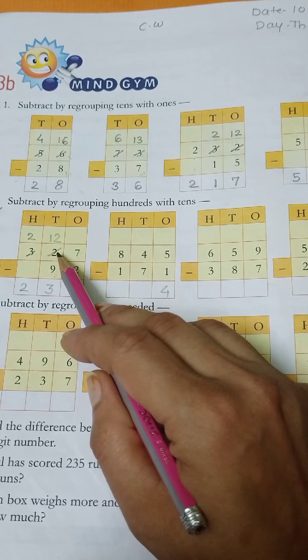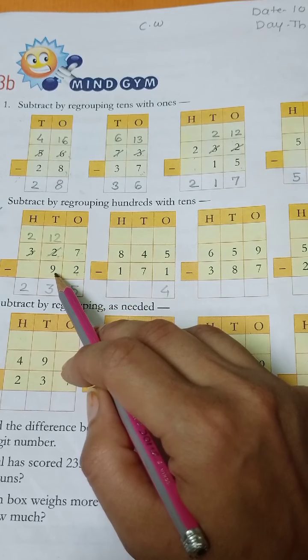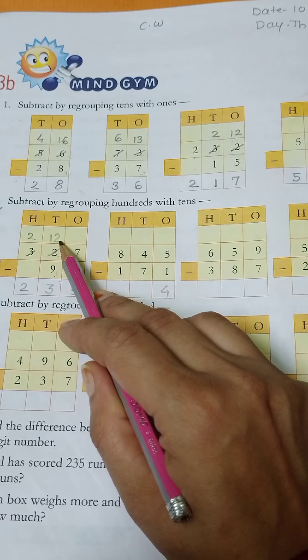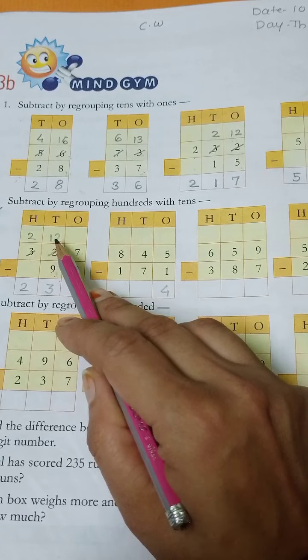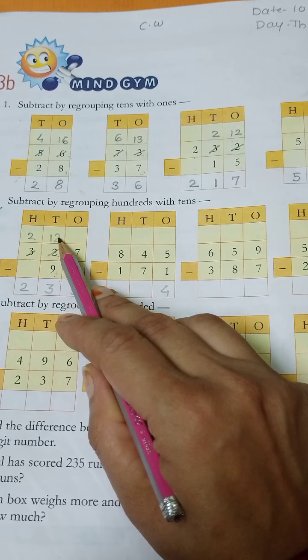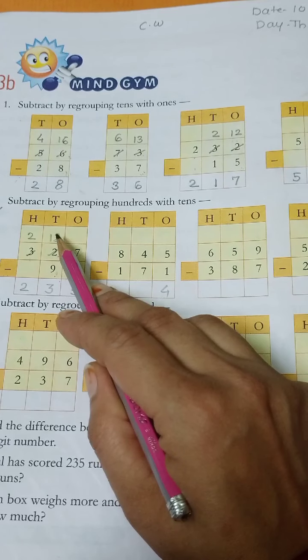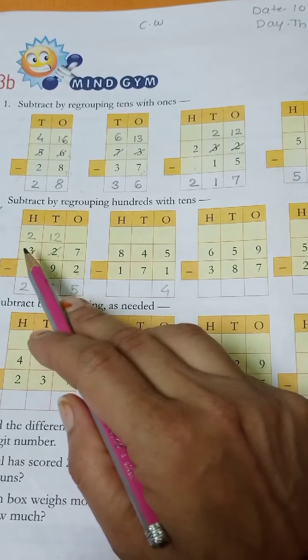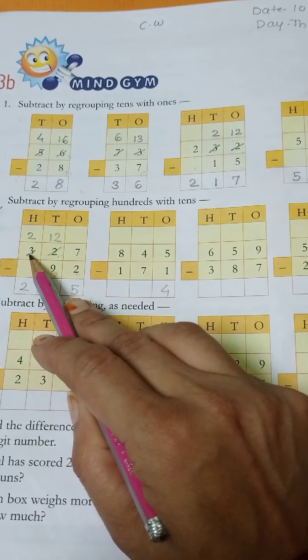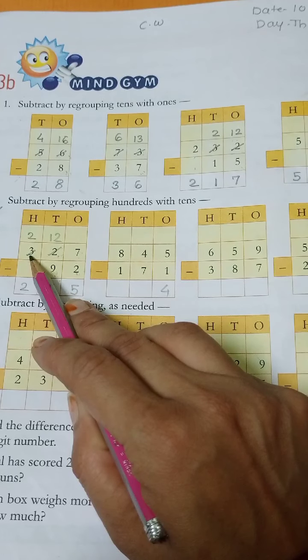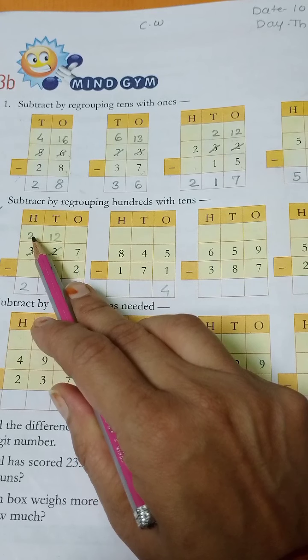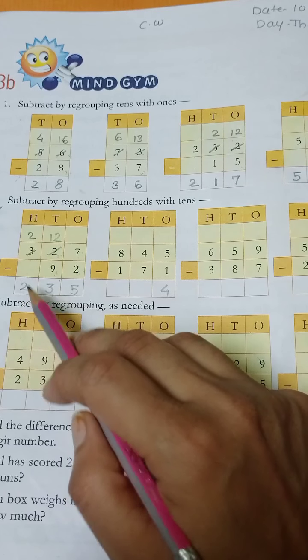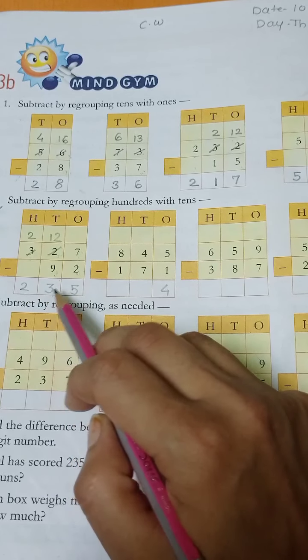As I told you, if smaller number minus greater number, you have to take the help of regrouping. 2 plus 10 is equal to 12. Then 12 minus 9 is 3. Then on the left side you have to do 1 minus, 1 borrow. It means 3 minus 1 is equal to 2. And 2 as it is right here. So answer is 235.